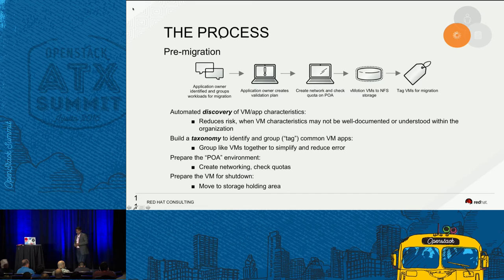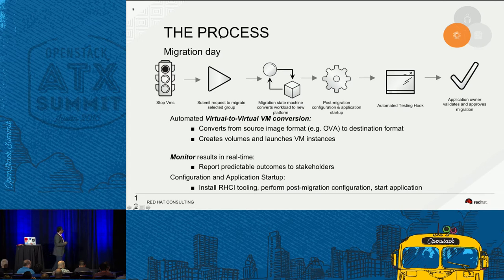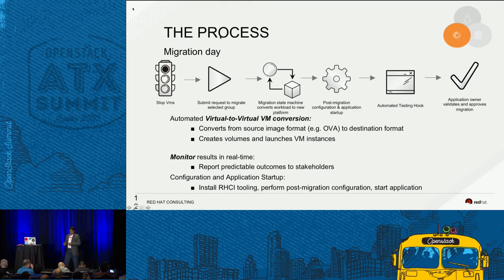Once you do that, you prepare your point of arrival environment — either building your OpenStack target platform from scratch or building your Red Hat Virtualization platform and making it available to the management tooling. You build a shared storage environment as a holding area to migrate workloads from one virtualization platform to OpenStack. On migration day, we don't want to migrate running VMs because you never know what's running in memory. When moving between completely different hypervisor platforms, the safest approach is to shut down those VMs and migrate.